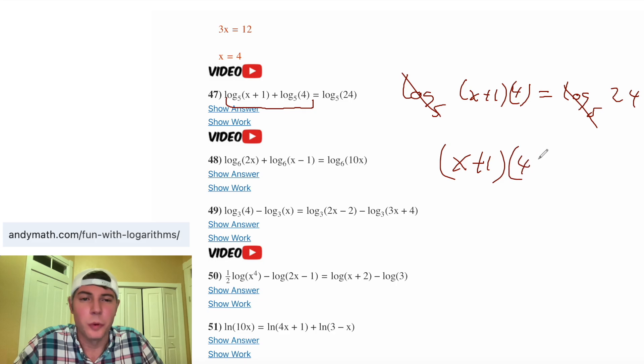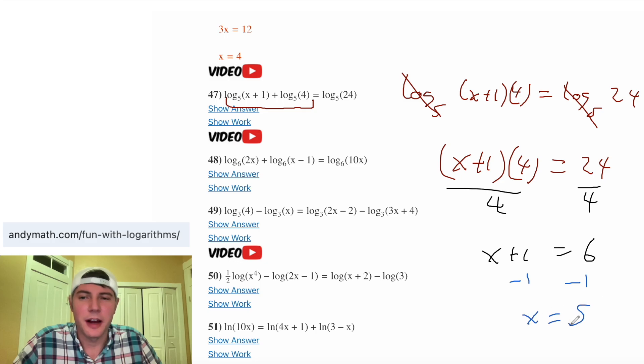(x + 1) times 4 equals 24. To solve this, we can divide both sides by 4. We have x + 1 equals 24 over 4, which is 6. Subtract 1 from both sides and we get x equals 5. So if we go up here and hit show answer, it should be 5. Yep, x equals 5. And once again, there's work.